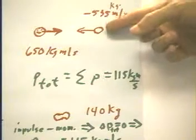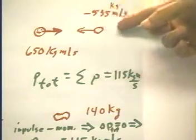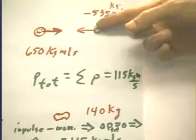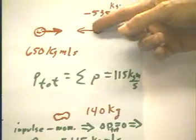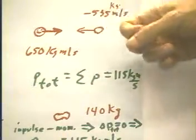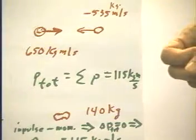The second object has a momentum of negative 535 kilogram meters per second, a slightly smaller momentum than the first, as shown by the slightly shorter arrow and slightly smaller disk.